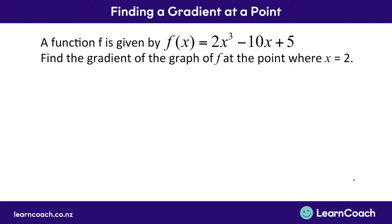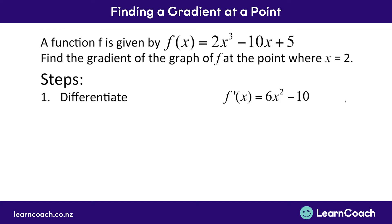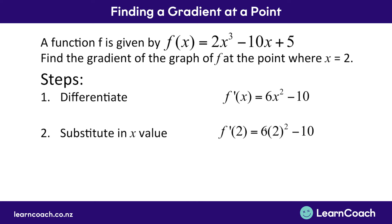Let's look at one final example. A function is given by f(x) equals 2x to the power of 3 minus 10x plus 5, and we need to find the gradient when x equals 2. We're finding a gradient, so let's differentiate first. Differentiating gives us 6x squared minus 10. Remember, we use the prime notation when differentiating f(x). Next, we substitute x equals 2 into the equation, giving f prime of 2 equals 6 multiplied by 2 squared minus 10, which equals 14. So the gradient when x equals 2 is 14.